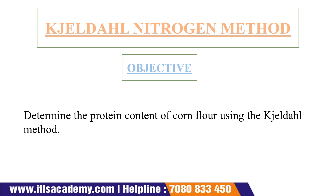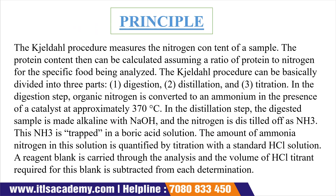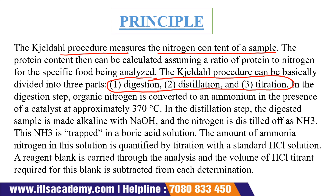The objective is to determine the protein content of a corn flour sample using the Kjeldahl method. The principle is divided into three parts: digestion, distillation, and titration. The Kjeldahl procedure measures the nitrogen content present in a food sample, and the protein content is then calculated assuming the ratio of protein to nitrogen for the specific food being analyzed.